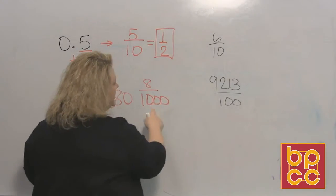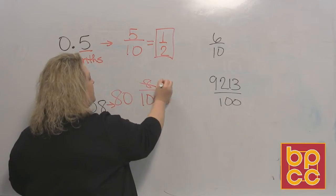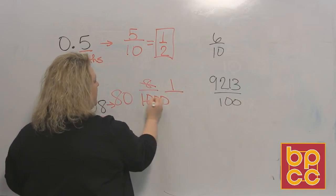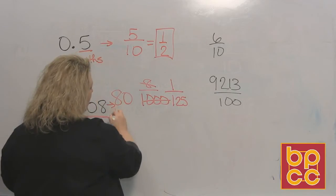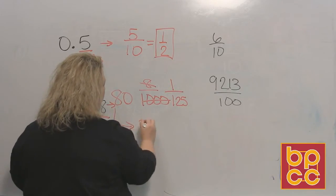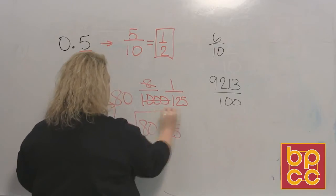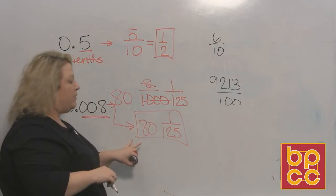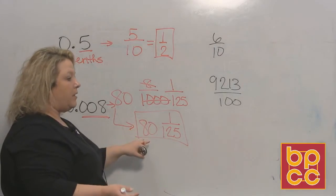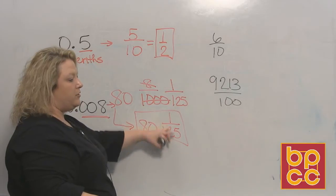Well, lucky for us, 8 does divide evenly into a thousand. 8 divides into itself one time. 8 divides into a thousand 125 times. So our final mixed number is going to be 80 and 1/125. Anytime you have a number in front of your decimal point, you should, when you change it to a mixed number, get a mixed number. You should get the number and then the decimal part turns into the fraction.